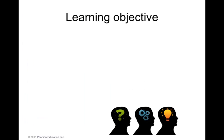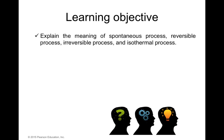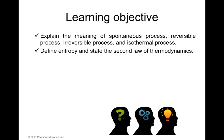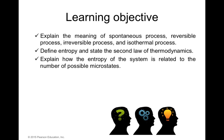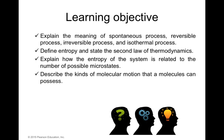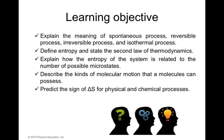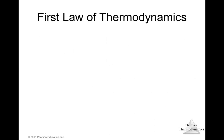At the end of this module you will be able to explain the meaning of spontaneous process, reversible process, irreversible process, and isothermal process. You will also be able to define entropy and state the second law of thermodynamics, explain how the entropy of a system is related to the number of possible microstates, describe the kinds of molecular motion that molecules can possess, and predict the sign of delta S for physical and chemical processes.